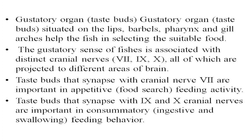Gustatory organs are commonly called taste buds, situated on the lips, barbels, fins, and gill arches, helping the fish in selecting suitable food. The gustatory sense of fishes is associated with distinct cranial nerves — the seventh, ninth, and tenth cranial nerves — all projected to different areas of the brain. Taste buds connected with the seventh cranial nerve are important in appetite, meaning food search and feeding activity. Taste buds connected with the ninth and tenth cranial nerves are important in consummatory behaviour, meaning ingestive and swallowing of feeding behaviour. Thank you.